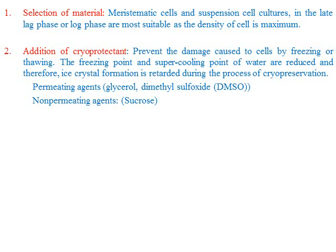The next step is addition of cryoprotectant. After selecting material and keeping it in culture conditions, you have to add some chemicals called cryoprotectants. They are called cryoprotectants because these chemicals prevent your cells from the damaging effects of freezing and thawing. They also avoid ice crystal formation during cryopreservation. There are two types: one is called a permeating agent, which can diffuse into the cell, and another one is called a non-permeating agent, which remains in the surrounding medium.